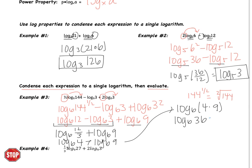Step two is to evaluate. When you evaluate a log, set the log equal to x — we want to know the value of log base 6 of 36. Switch to exponential form: 6 is the base, 36 is the argument, and x is the exponent — sometimes it helps to remember B-A-E. So this becomes 6 to the x equals 36. That's 6 to the x equals 6 squared, so x equals 2. That whole long expression at the beginning is all just equal to 2.